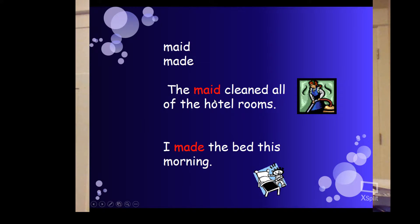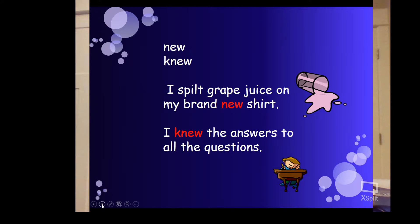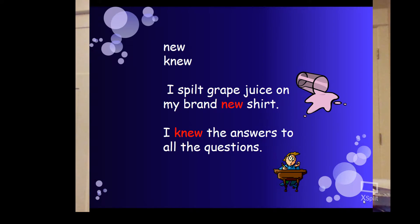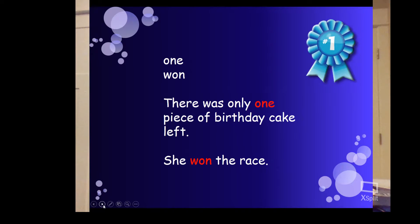Now we have maid versus made. 'The maid cleaned all of the hotel rooms' — maid has an I, so it's a person, an occupation. 'I made the bed this morning' — that's an action. Next, new versus knew. 'I spilled grape juice on my brand new shirt' — no K. 'I knew the answer to all the questions' — that has a K. Think of K as knowledge — I knew that. Then one versus won. 'There was only one piece of birthday cake left' — O-N-E, just a number. 'She won the race' — that means you triumphed, you've done it.